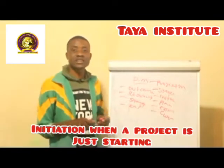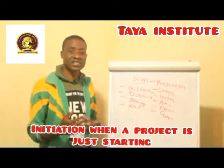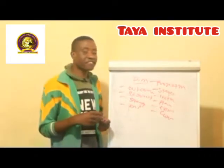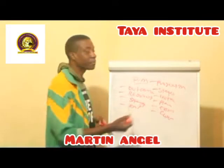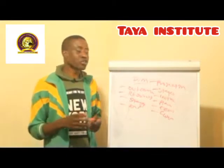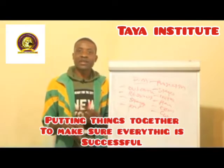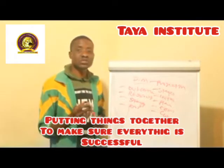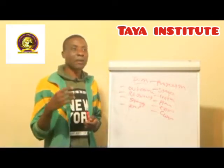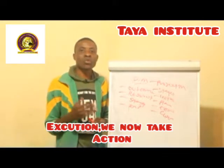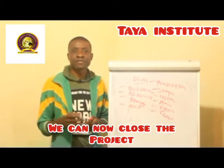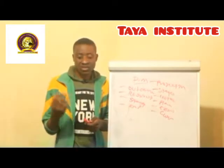The initiation stage simply means this is when a project is actually starting — it's at the beginning. After this stage, we come to the planning stage, where members of staff and stakeholders that are part of the project come together and plan to ensure that the project becomes a success. After planning, we have to execute — whatever was planned, we put it to action. After execution, we close the project and move on, perhaps to the next project.